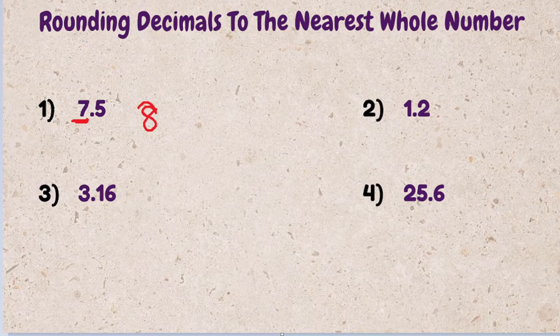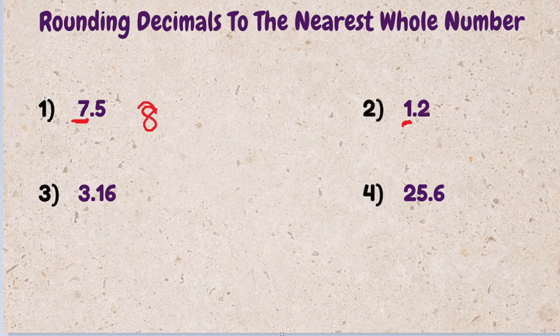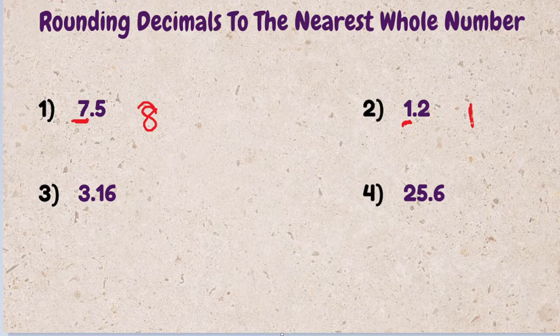Number two, 1.2. One is our whole number. Two, we said if it was four or less, we would keep the whole number the same. So 1.2 rounds to one.